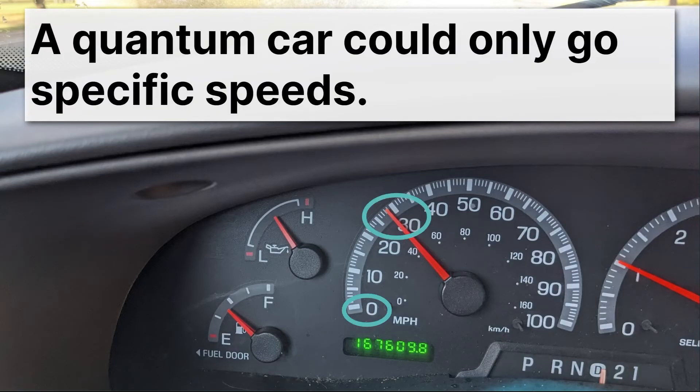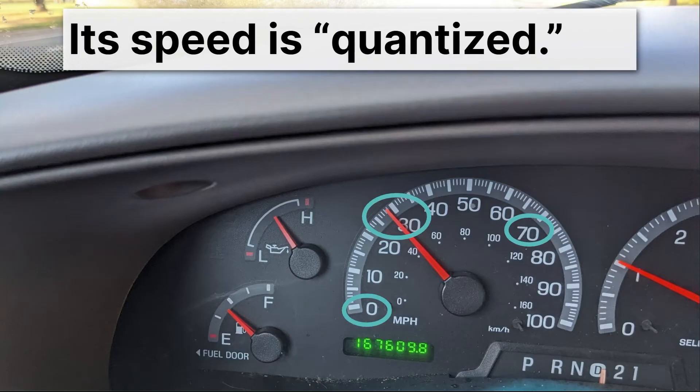And then if you give it a little energy, you hit the gas pedal, it goes immediately to 30. It can't go anywhere in between. It cannot go 10 miles an hour. It cannot go 11 miles an hour. And then maybe you hit the gas a little more and it goes to 70. These speed jumps would be what is called quantized. So here its speed is quantized. What does that mean?